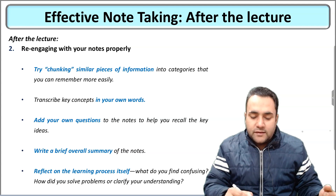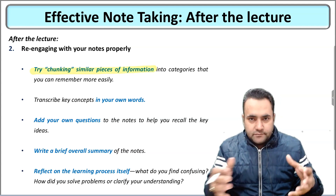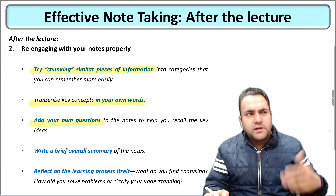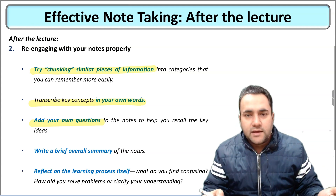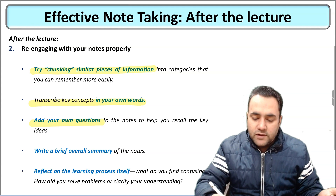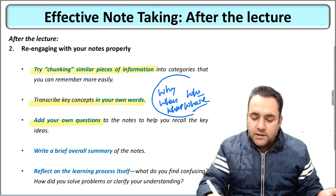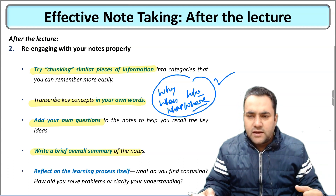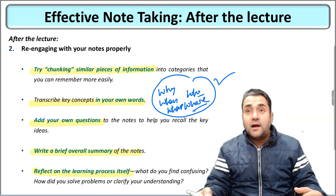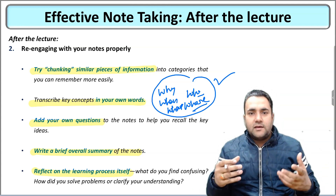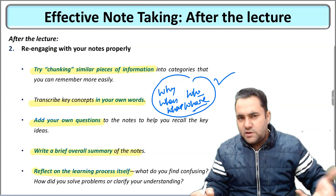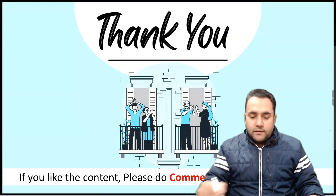Rearranging your notes: try chunking similar pieces of information together. Paraphrase concepts in your own words. Add your own questions using question words — why, when, what, who, where — to write down potential questions someone might ask about the concept. Write an overall brief summary of the entire lecture in 4–5 lines. Finally, reflect on the learning process itself: ask whether what you are doing will help you remember this later. If you think of a new concept or want to include something new, make sure you include it in your notes.